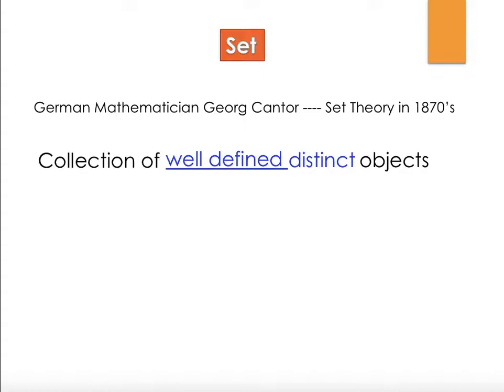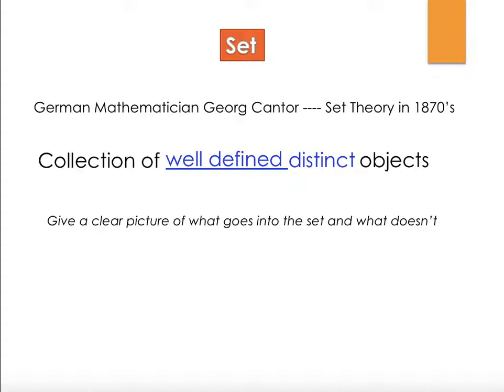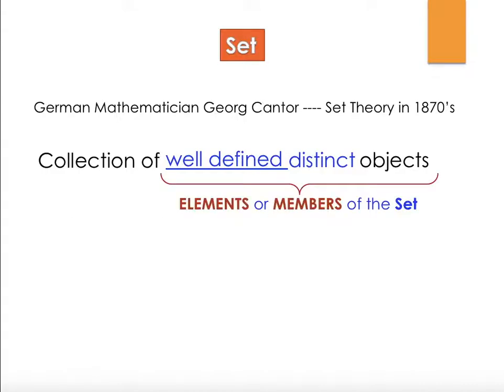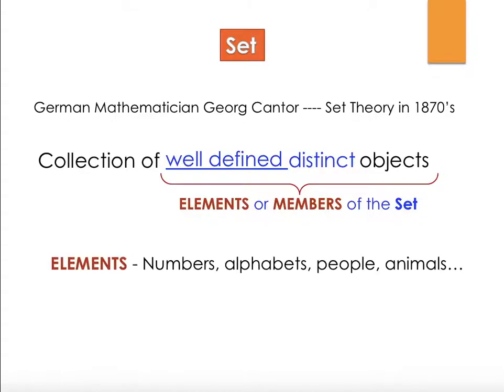What do we mean by well-defined? We mean we have to give a clear picture of what goes into a set and what doesn't belong to the set — it has to be very clear. We also want distinct objects so that we don't have repetition of things.